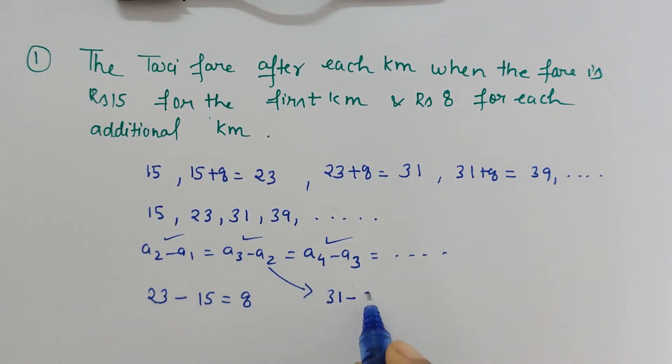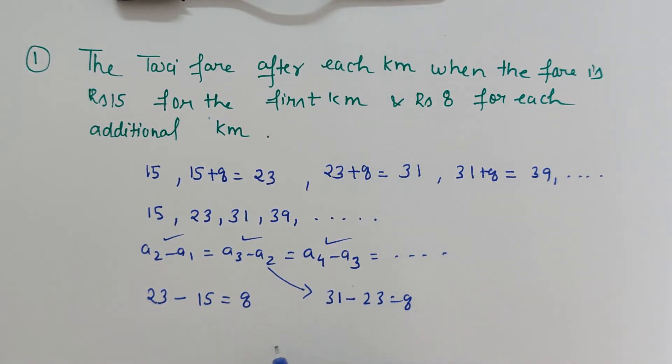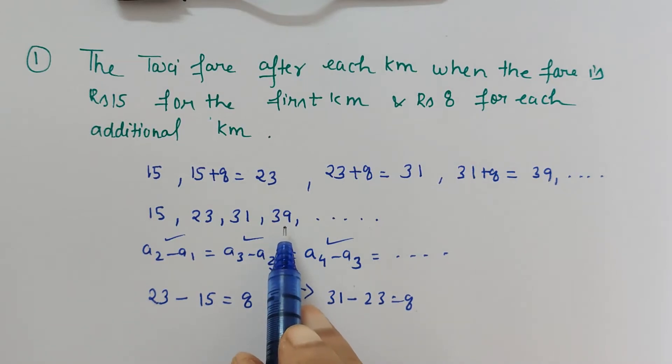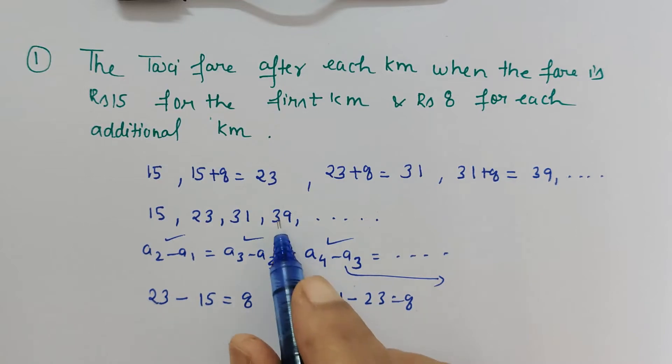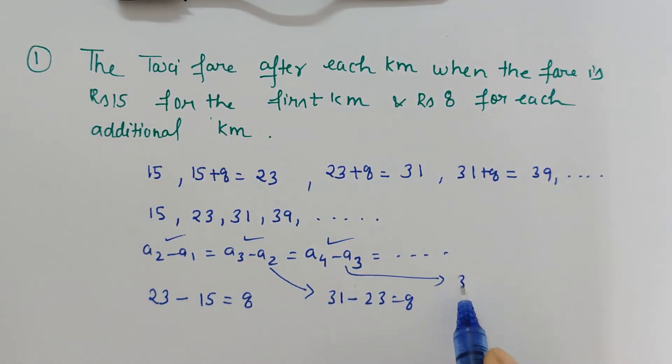And if we want to check further, again 39. For this, fourth term a4, third term a3, 39 minus 31 again gives 8. Hence it has a common difference.